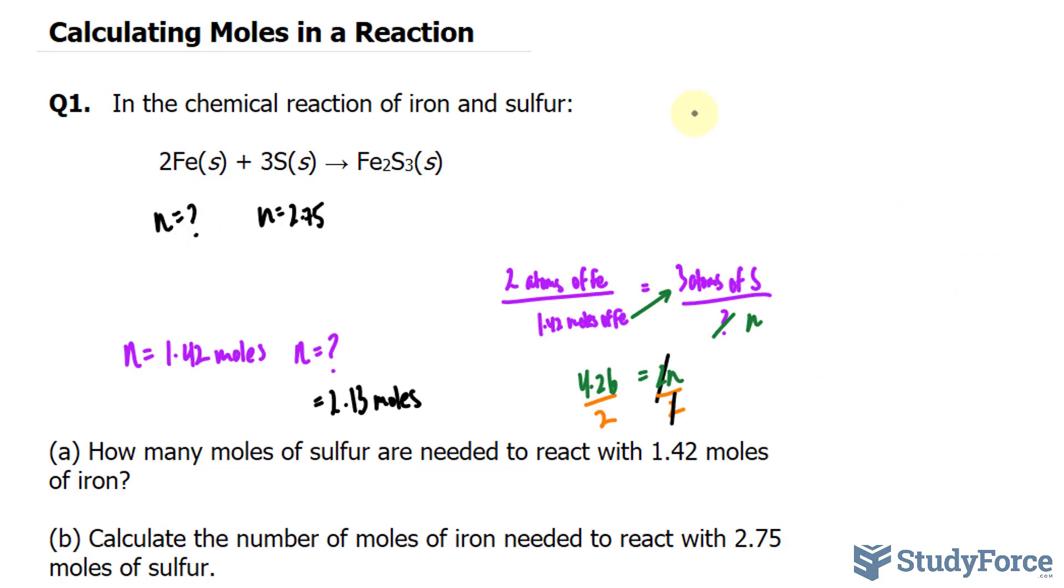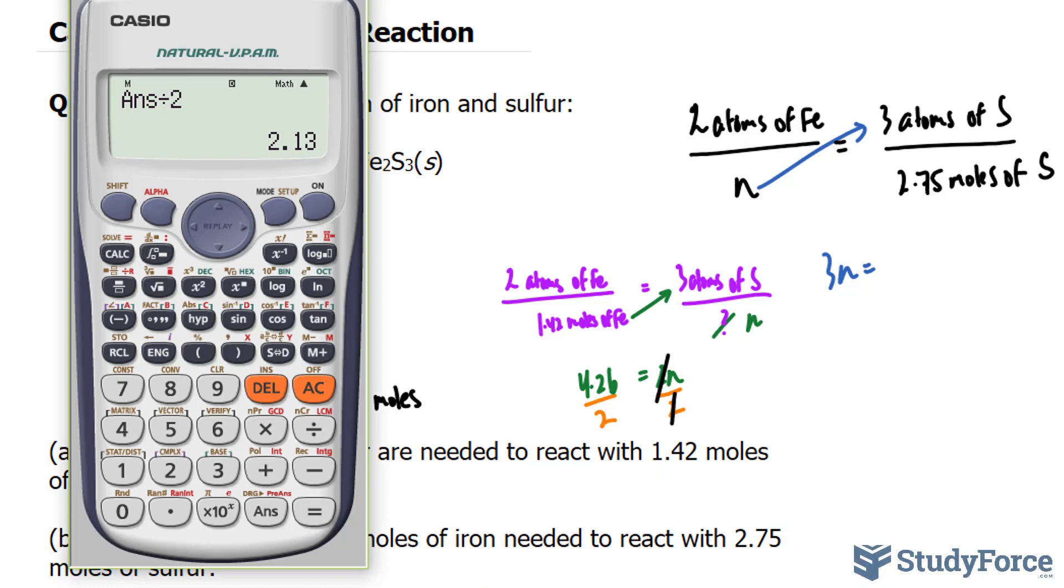Setting up our ratios, we have two atoms of iron per every unknown number of moles is equal to 3 atoms of sulfur per every 2.75 moles of sulfur. Doing the cross multiplication, N times 3 is 3N. And 2.75 times 2 is 5.5.